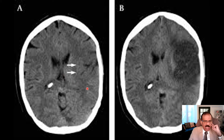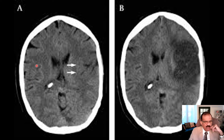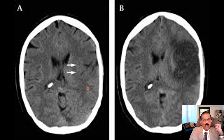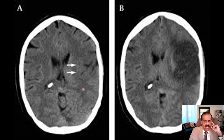Going back to the initial CT scan and examining it more carefully, you would appreciate that this area is not exactly normal — the demarcation between white matter and gray matter is quite well defined elsewhere, but this part has lost the normal demarcation between gray matter and white matter. That should make you suspect a problem here, particularly when you correlate with the history.